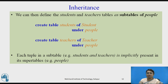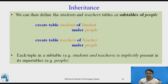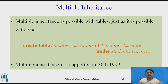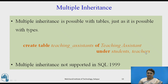When creating tables, each tuple in a sub table is automatically implicitly present in the super tables. Similarly, for multiple inheritance, we create: create table TeachingAssistant of TeachingAssistant under the tables students and teachers. However, this multiple inheritance is not supported by SQL 99.